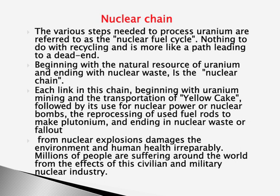The nuclear chain and the various steps needed to process uranium are referred to as the nuclear fuel cycle — beginning with the natural resources of uranium and ending in nuclear waste. This chain keeps going, creating debris of fissile material. You can even prepare fuel rods and make plutonium, all ending in nuclear waste and damages from nuclear explosions.